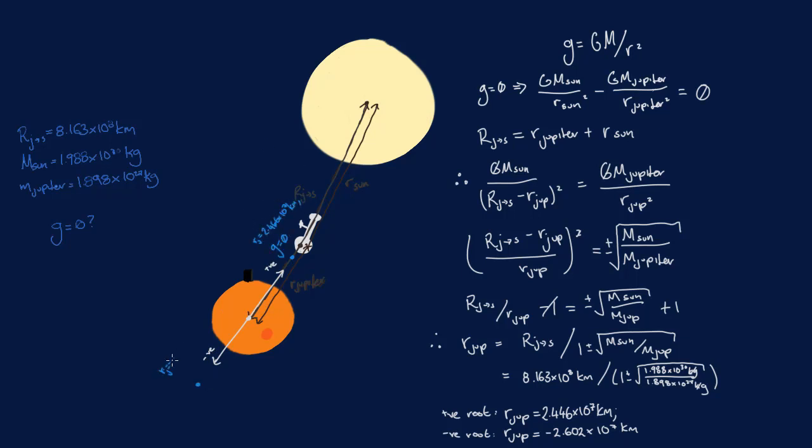Using the negative root in our equation, we find that the distance from Jupiter is equal to minus 2.602 times 10 to the 7 kilometers.